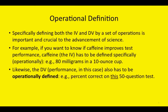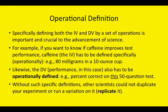Likewise, the dependent variable, performance in this case, also has to be operationally defined. For example, percent correct on this particular 50-question test. Without such specific definitions, other scientists could not duplicate your experiment or run a variation on it, so-called replications.